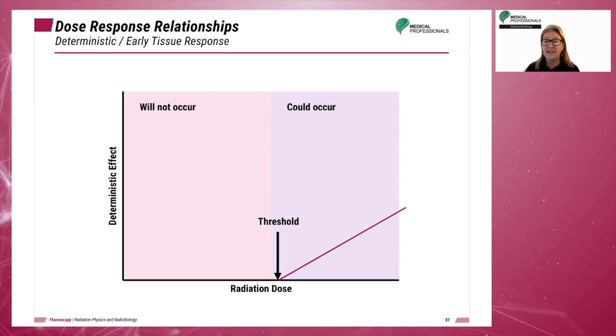The takeaway here: it has been determined that there is a safe dose for all deterministic responses to radiation. Once that safe dose has expired, the response will be evident, and the higher the dose of radiation, the more severe the response will be. Also, deterministic responses are cumulative. The dose does not have to be received all at once.